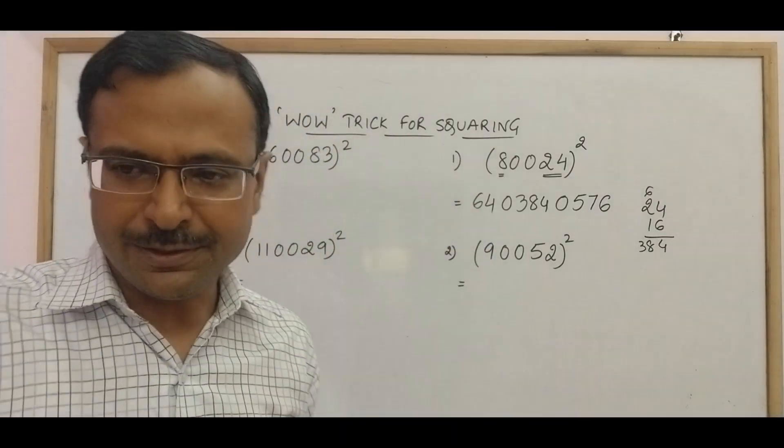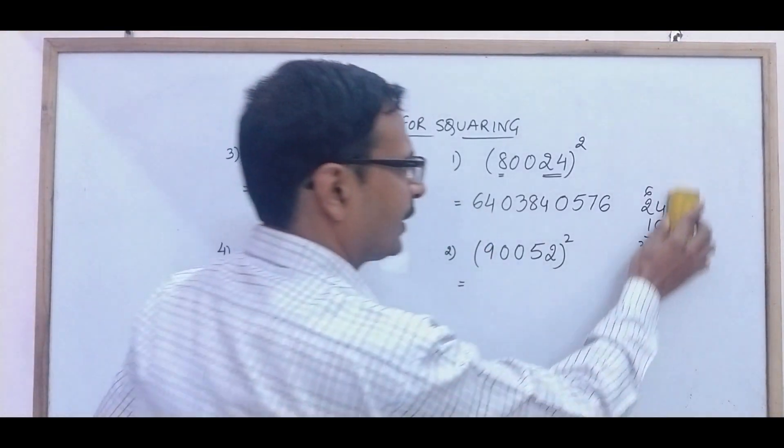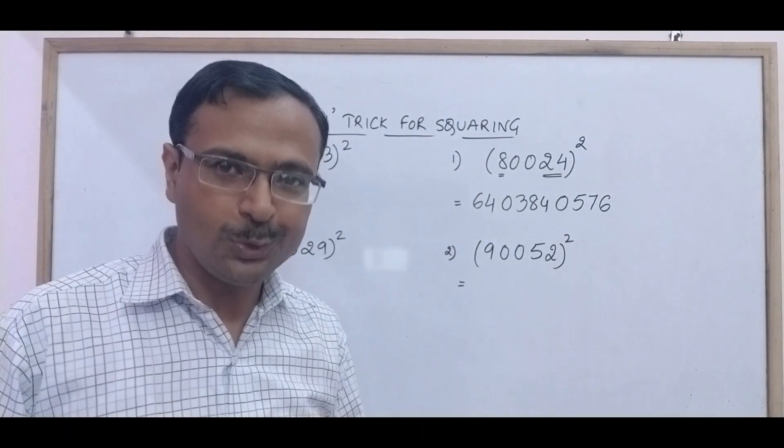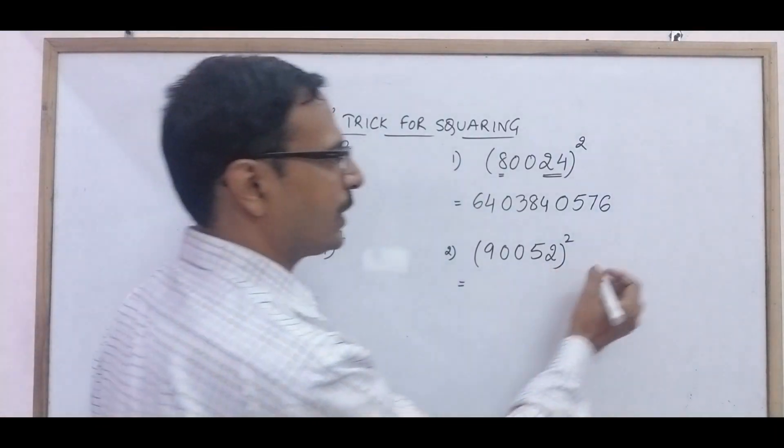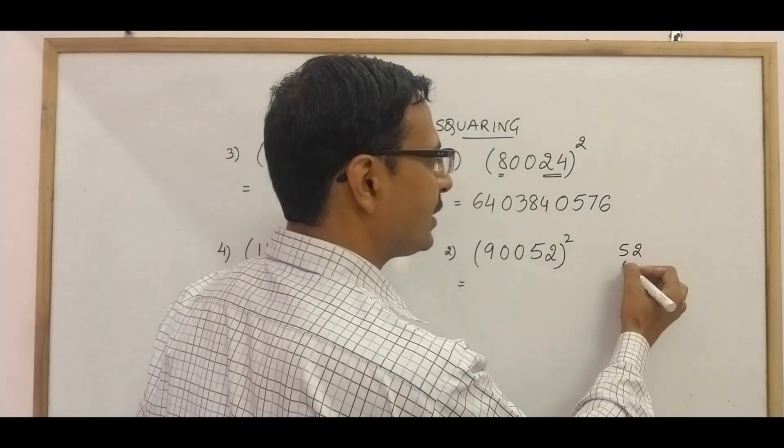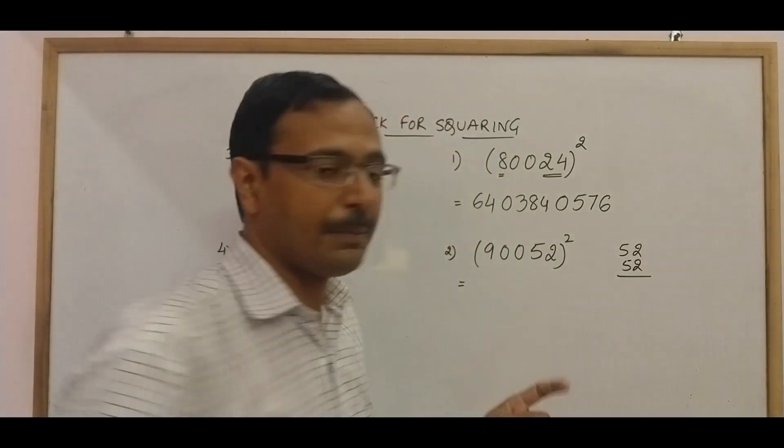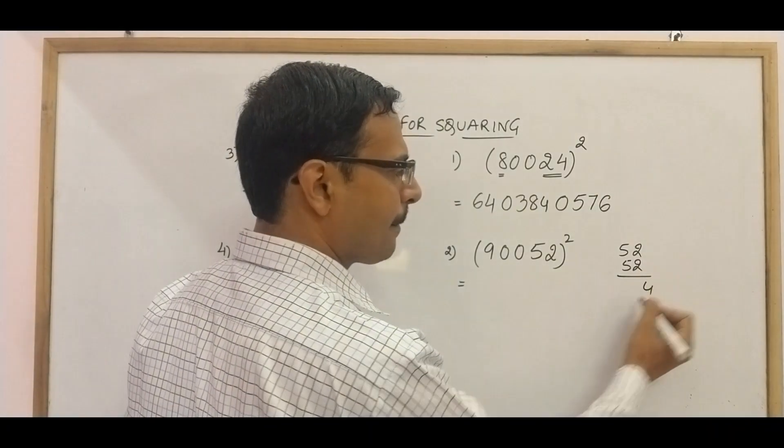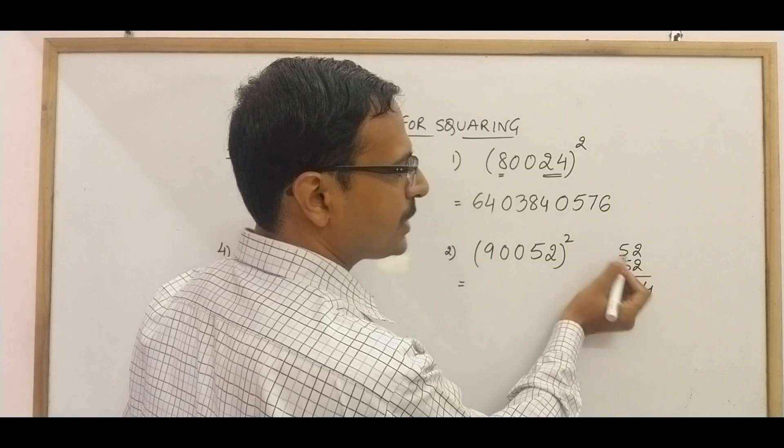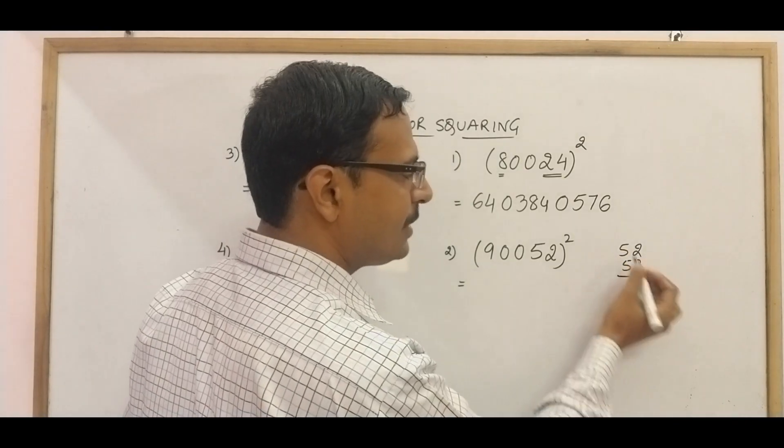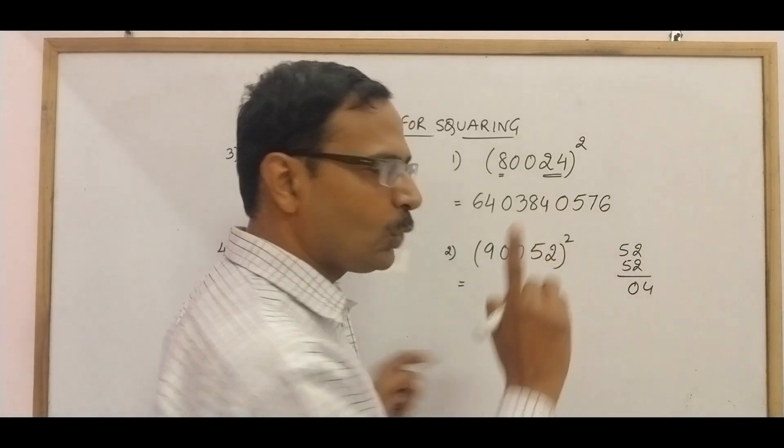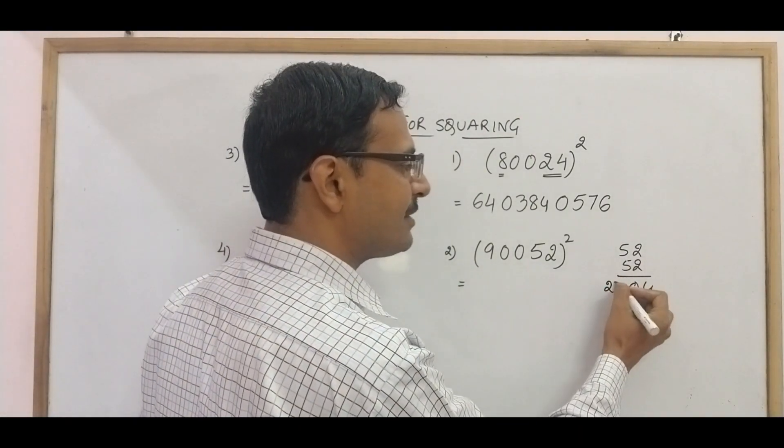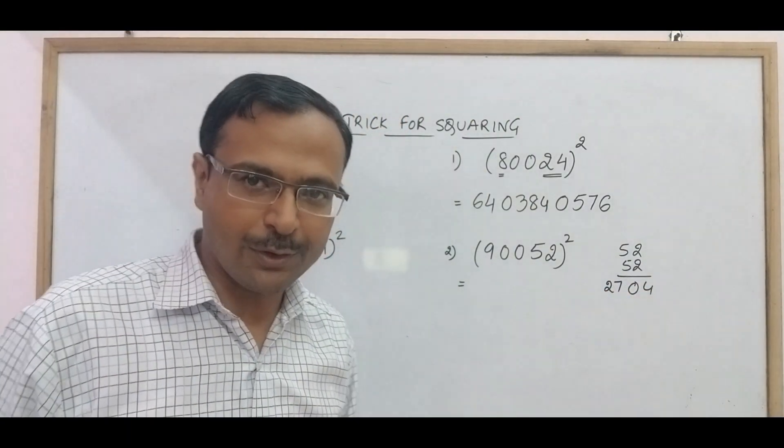Let's apply it here in the second question. See here we have 90052 whole square. So I need the square of 52, how do you find the square of 52? So I will be using the vertically and crosswise method of multiplication now. 2 into 2 is 4, crosswise 5 to the 10, 5 to the 10, so 20, 20 means 0 and 2 carry, 5 into 5 is 25 and 2 is 27, so 2704 is the square of 52.